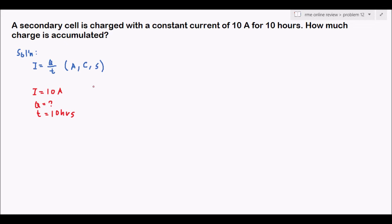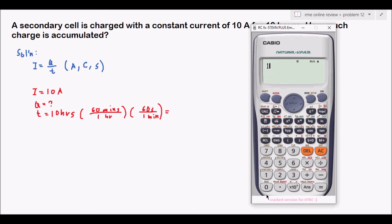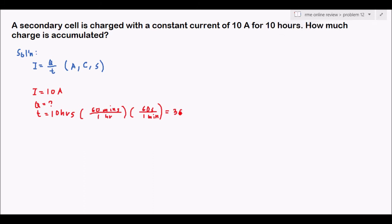Checking the units: amperes for current, the charge answer will be in coulombs, and the time must be in seconds — but the given is in hours. We convert: 10 hours times 60 minutes per hour times 60 seconds per minute. Using our calculator: 10 times 60 times 60 equals 36,000 seconds.